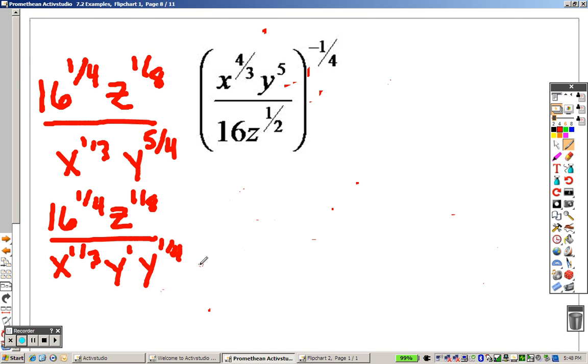Because that's 1 fourth, if I multiply by y to the 3 fourths on both the top and the bottom, if I multiply by y to the 3 fourths, that makes a whole y. And I need to make this, I need to get rid of that. But we'll come back to that in a second.